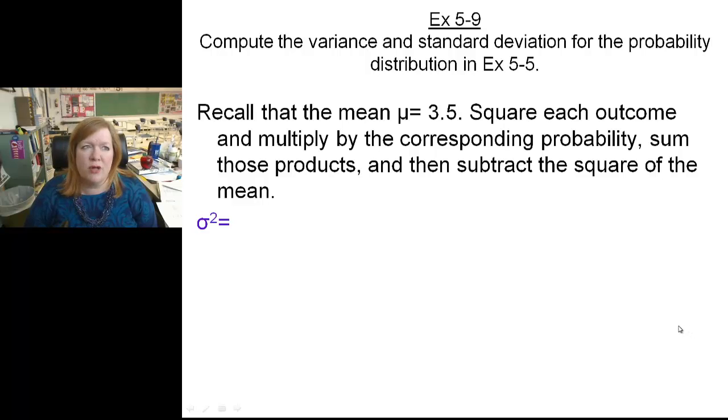Five dash nine, here's where we're using our next formulas. You might want to look at the front just to familiarize what your formula is for variance and standard deviation. Once you find variance, all you have to do is take the square root. So we also are going to have to subtract the mean off the end. So we're going to square each outcome by corresponding probability, sum those products, and then subtract the square of the mean. This should look familiar to you if you remember your frequency distribution way, way back, last year.